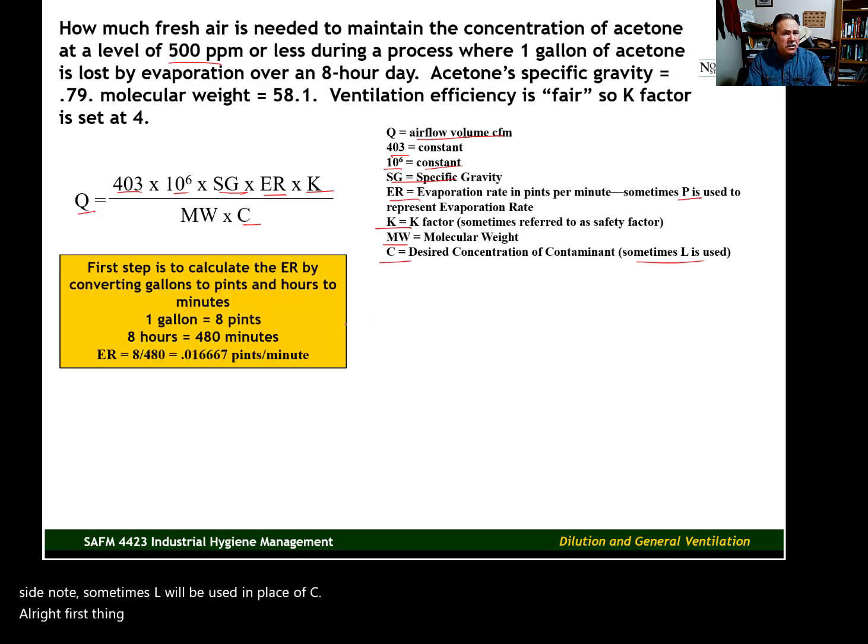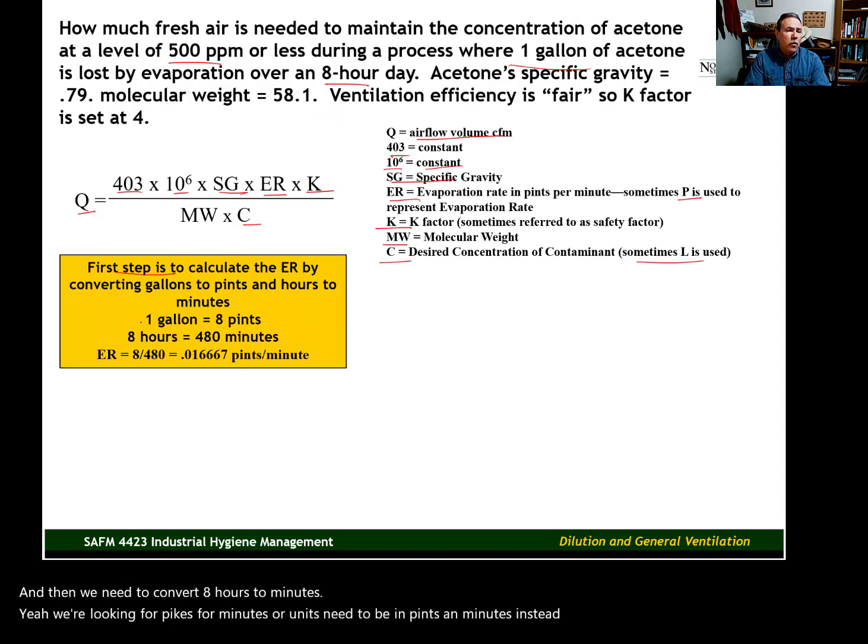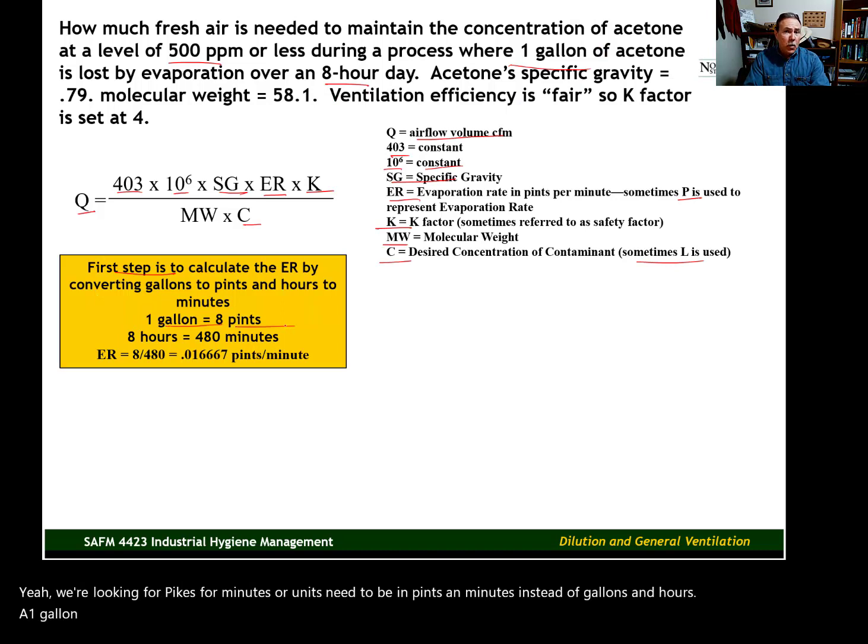First thing we need to do, and it's a simple formula. It looks like we just plug in the numbers and do the calculation, but there are some preliminary calculations that are necessary in this problem. First, we need to calculate the evaporation rate in pints per minute. We have one gallon, so we need to convert gallons to pints, and then we need to convert eight hours to minutes. Again, we're looking for pints per minute, so our units need to be in pints and minutes instead of gallons and hours. One gallon equals eight pints, so we had eight pints evaporate over an eight-hour day. Eight hours equals 480 minutes.